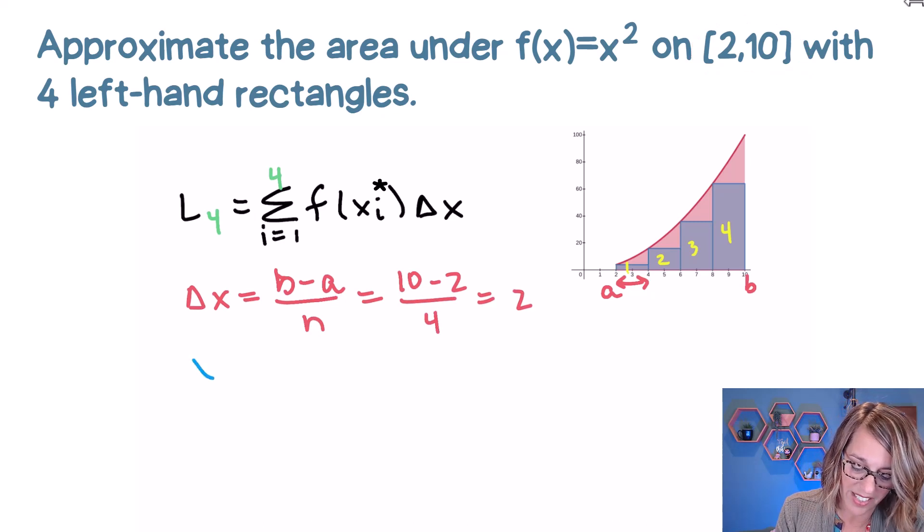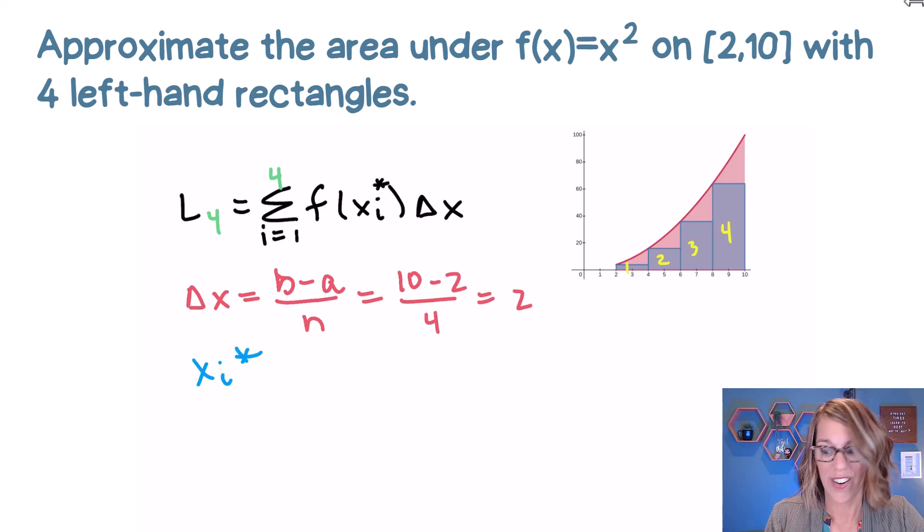Next, we want to figure out what that x sub i star is equal to. In our example, we want to use two to compute that first height, four to compute the height for the second, six to compute the height for the third, and eight to compute the height for the fourth. So when we're computing our x sub i star, that sample point, we do want to start where our interval starts, which is a, in this case, a is equal to two.